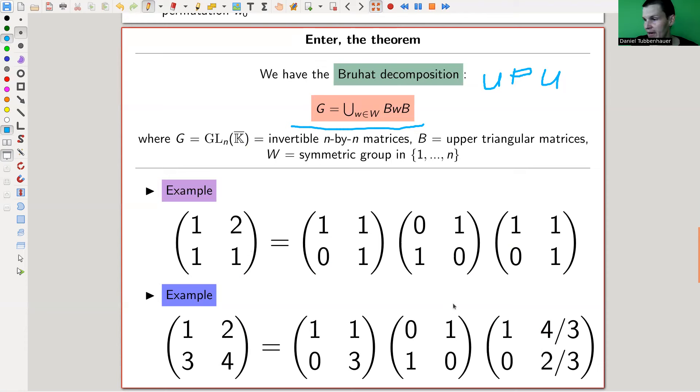So permutation matrices in this case. And you can really just do it. And you really need those. So for example, this matrix, if you want to write it as upper, upper, so here's upper, here's upper, then you need the non-trivial permutation matrix in the middle. And here kind of upper, and upper, and the non-trivial permutation matrix in the middle. And you can do that, of course. And if you just have an upper triangular matrix, you can put the trivial permutation in the middle. But this is the point.